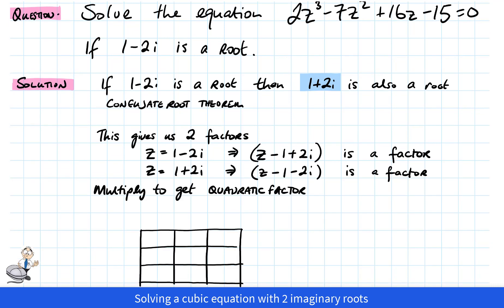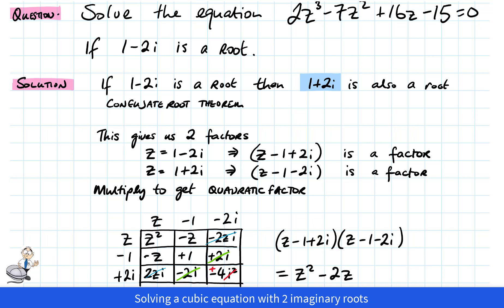If we multiply these two factors, we could get a quadratic factor. So we multiply these two linear factors. We create a grid to multiply these nine little multiplications. When we do, remember i² means -1. We see there's some cancellations: 2i and -2i, 2zi and -2zi. So when we see what's left, we see that there's z² - 2z + 5.